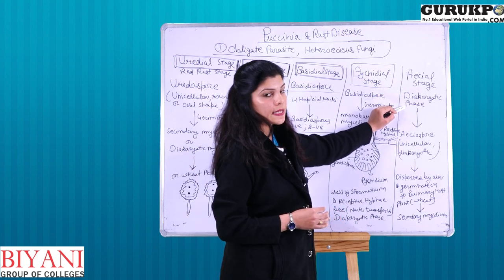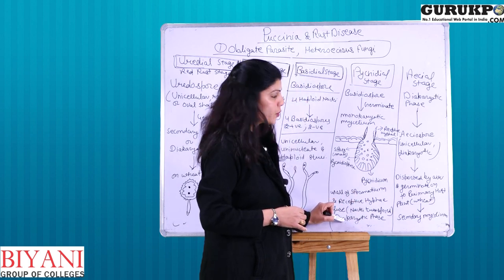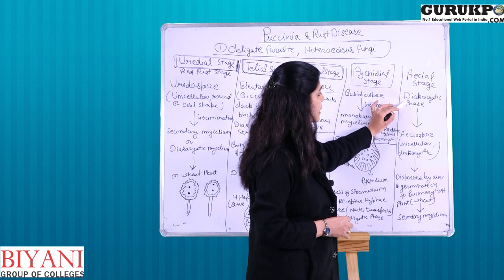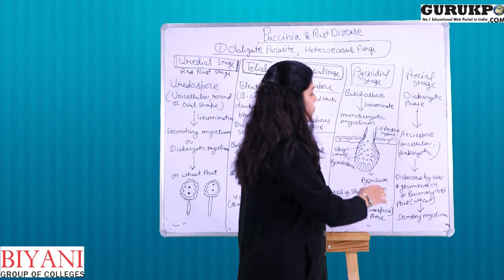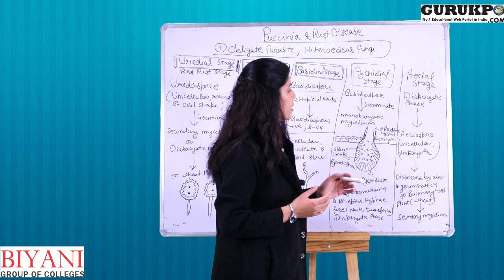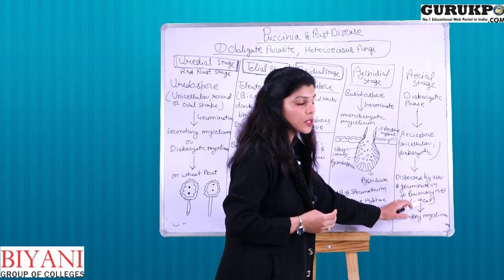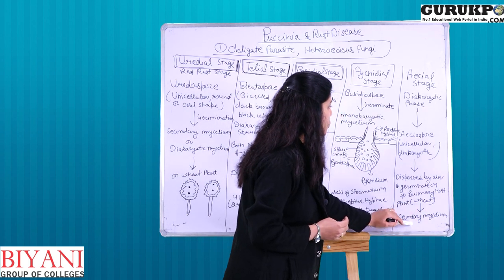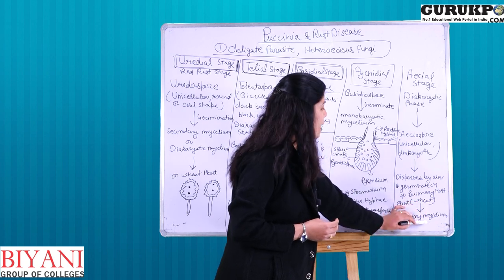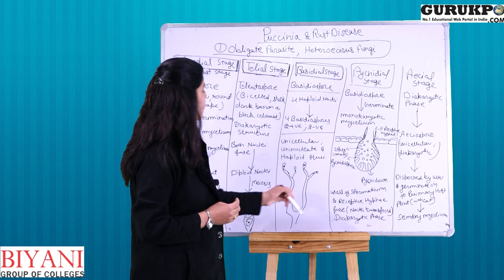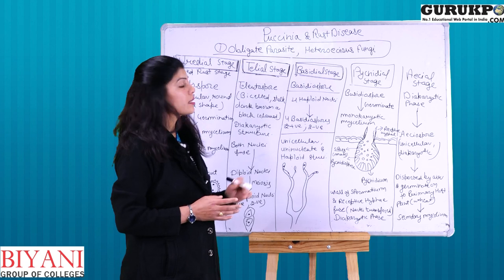The last stage is the aecial stage. The dikaryotic mycelium from the pycnidial stage develops into aecidiospores, which are also a dikaryotic structure. These aecidiospores are dispersed through air, germinate on the primary host plant — the wheat plant — and complete the life cycle back on wheat.